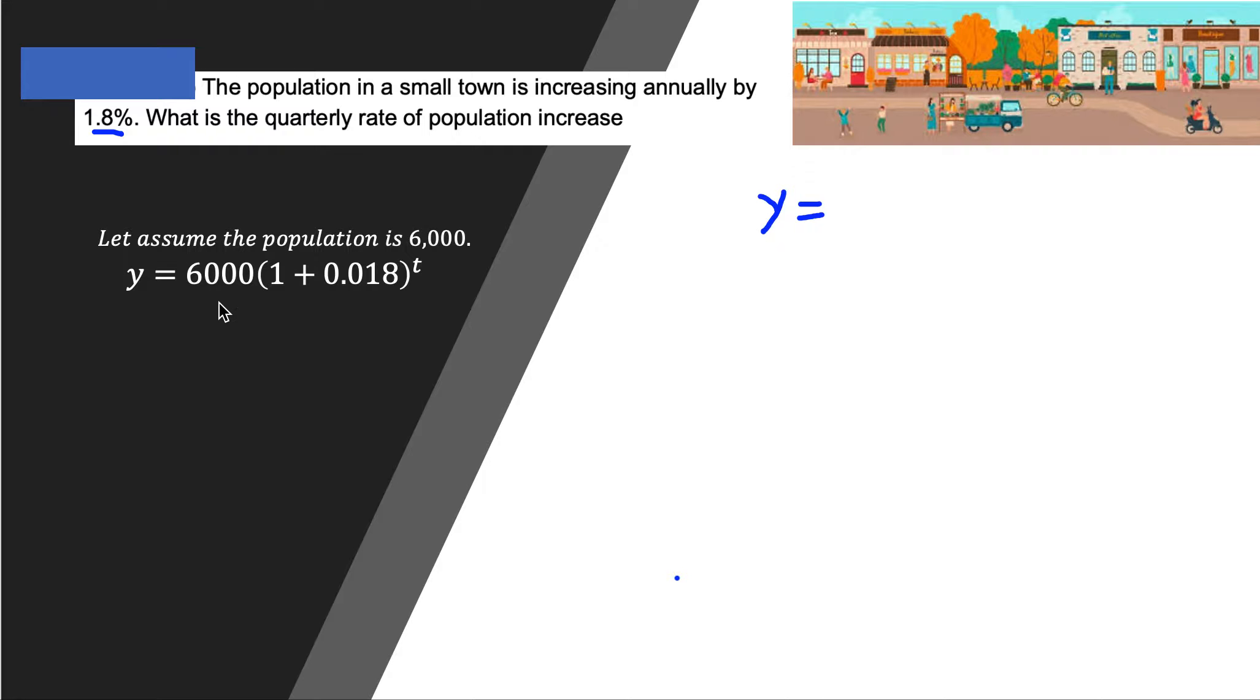We have y equals the initial value, 6000, which represents the population. The factor b is 1 plus the rate, which is 1.8%. If we're converting to a decimal number, that's 0.018.